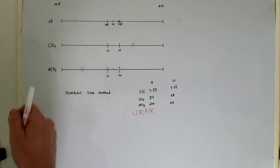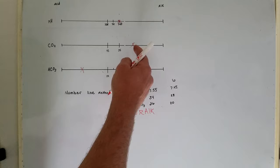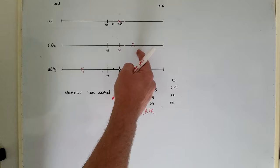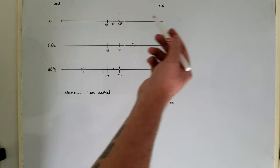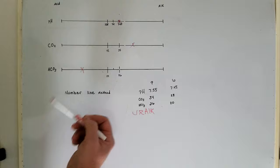Our bicarb down here is compensating to make up for this. Since this X is on the same side of the line as the problem with the CO2, then we can see that it's respiratory alkalosis and not metabolic acidosis, if that makes sense.